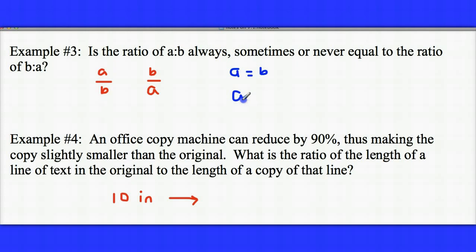Or if a and b were opposites, so for example 5 and negative 5, 5 over negative 5 would be the same as negative 5 over 5. So the answer to this is sometimes. They're sometimes equal. It depends on the values of a and b.